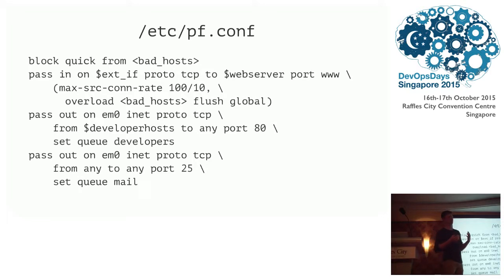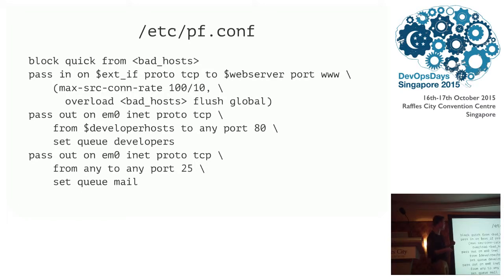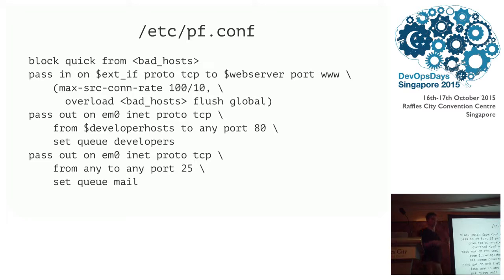The pf firewall language lets you specify what packets you would like to pass and what packets you would not. But you can't just specify things declaratively, because you have to keep stating your firewall rules and abstract over the configuration. So this language contains macros, table references, and even flow control definitions. By default, the last matching rule wins, and you can override that flow control by saying 'quick' so that the first matching rule wins.